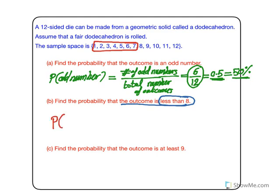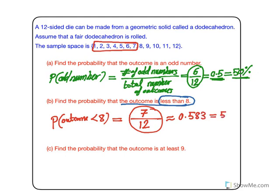The probability that the outcome is less than 8 is: how many numbers are less than 8? In this case, seven numbers out of the total of 12 outcomes. So 7/12—this is enough as an answer, but if you want it as a decimal, it's approximately 0.583, which is 58.3%.